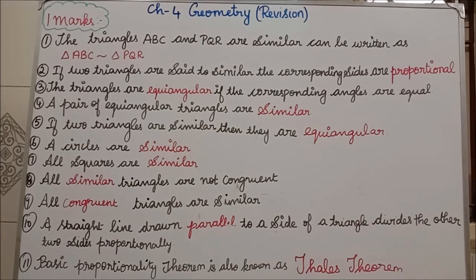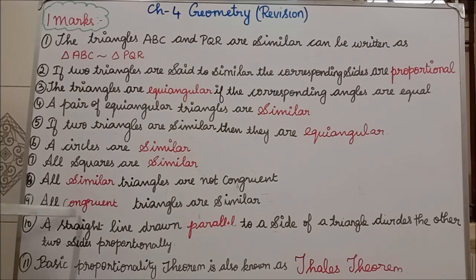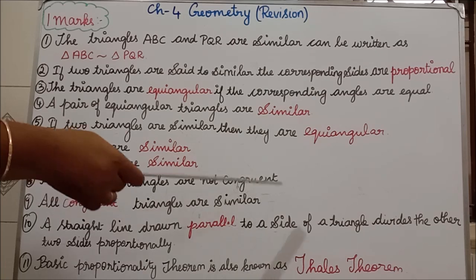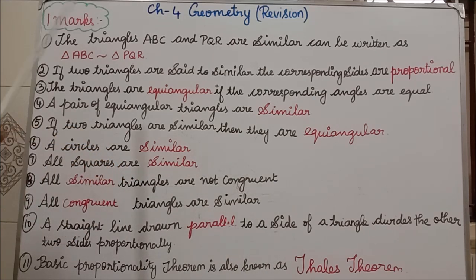Eighth one: all similar triangles are not congruent. Congruent is different; similar is different. In the first part of this topic, we learned about congruent and similar — you can go through the part one video. All similar triangles are not congruent. But in the ninth question, all congruent triangles are similar.